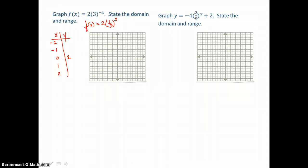Now let's put 1 in for x. 1 third to the 1st power is just 1 third. And 1 third times 2 is 2 thirds. Putting 2 in for x, 1 third squared is 1 ninth. And 1 ninth times 2 is 2 ninths.